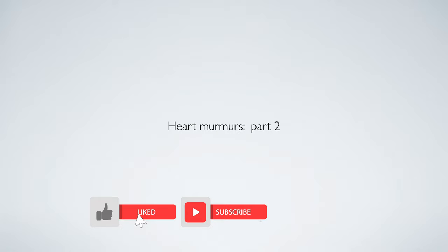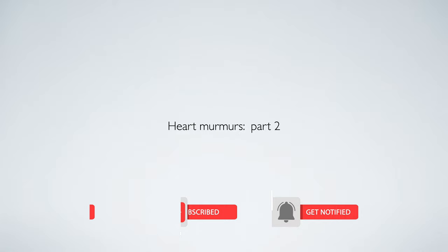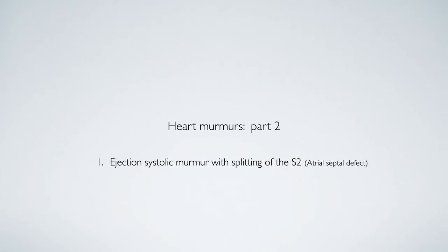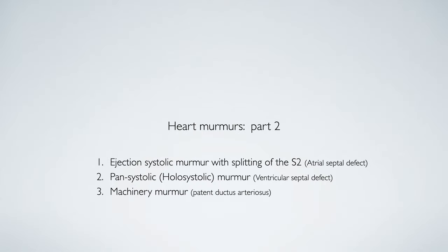Hello and welcome back to the Learn Medicine Show. My name is Dr. Coleman and in this episode we are going to be reviewing three more heart murmurs. These murmurs include the ejection systolic murmur with a split S2 found in atrial septal defect, the pansystolic murmur found in ventricular septal defect, and the machinery murmur found in patent ductus arteriosus.